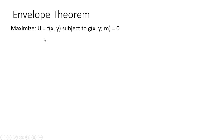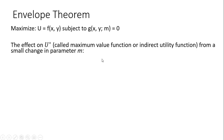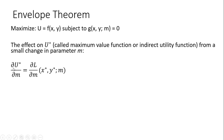We've got this function u that we want to maximize subject to this constraint. And the effect on u star — called the maximum value function, or in our application, the indirect utility function — is going to be the effect from a small change in parameter m, given by the following partial derivative.